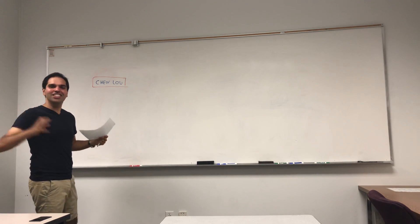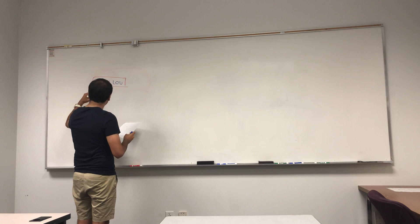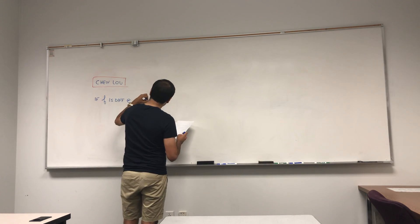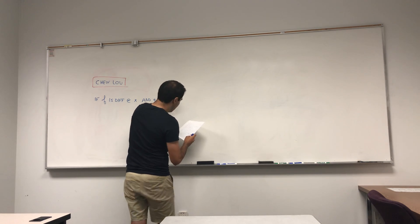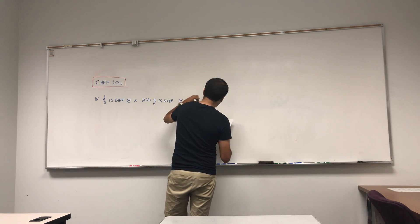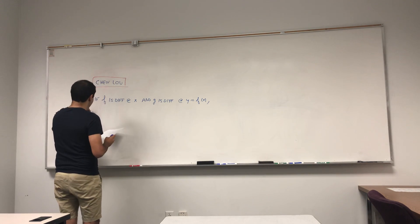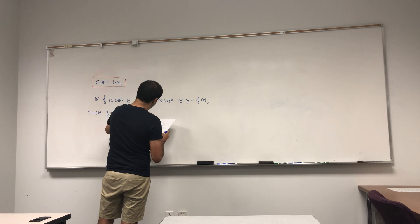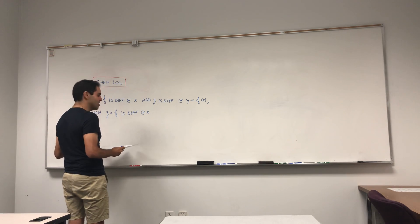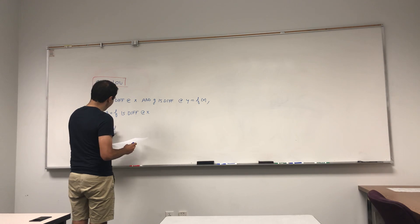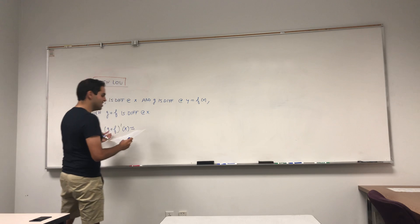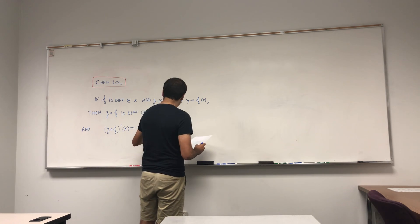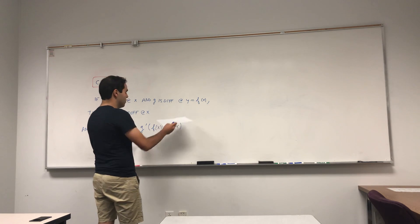So what is the chain rule? What it says is: if f is differentiable at x, and g is differentiable at f of x — let's call it y equals f of x — then the composed function g composed with f is differentiable at x, and the following rule holds: g composed with f prime equals g prime of f of x times f prime of x.